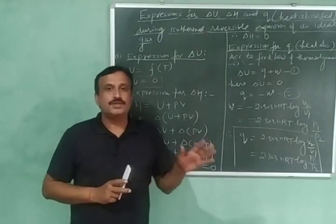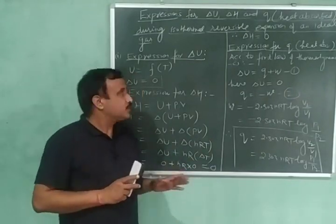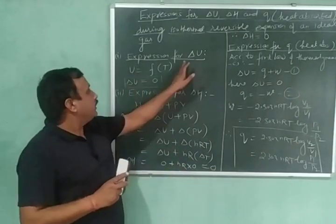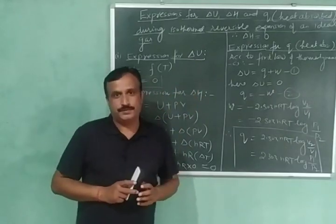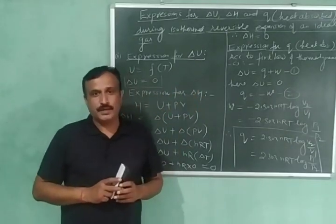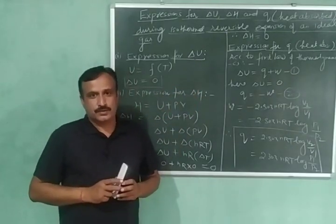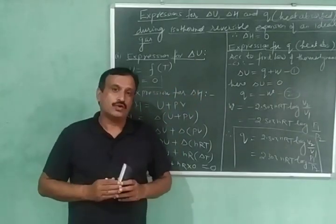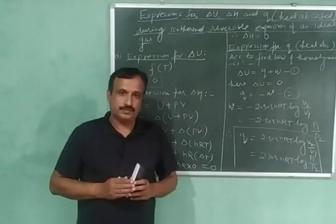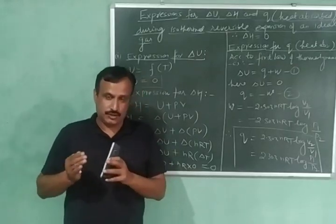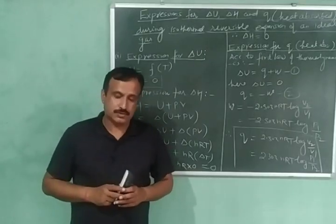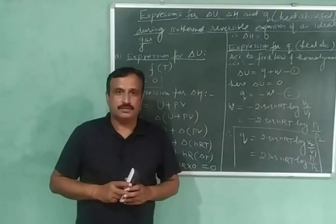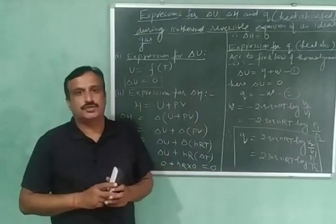So these were the various expressions for delta U, delta H, and heat absorbed during isothermal reversible expansion of an ideal gas. Thank you very much for watching. Please like and share my videos and subscribe to my channel. Thank you very much.